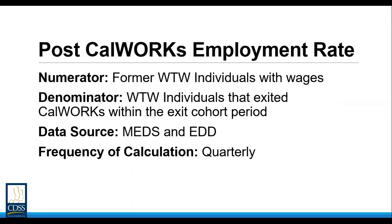The next measure is the post CalWORKs employment rate — simply a measure of how many people who exited CalWORKs in a specific quarter had EDD-reported wages two and four quarters after exit. So it's very similar to the last measure, but instead of asking how much people made it just asks how many people have wages six months and a year after leaving the program. The denominator is the same as the last measure — cohorts defined as welfare-to-work individuals who exited the program in a specific quarter — and the numerator is how many of those have EDD-reported wages in the measurement quarter.